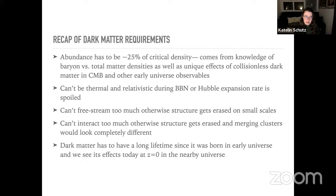We talked about a huge range of possibilities for the dark matter mass — really 90 orders of magnitude. Yesterday we focused on the blue region, the WIMPs, because that has been such a dominant paradigm for thinking about dark matter for such a long time, and for good reason.